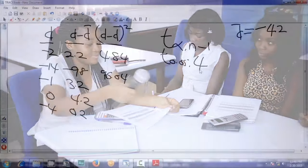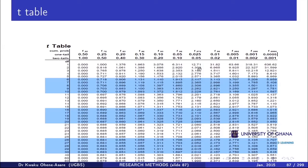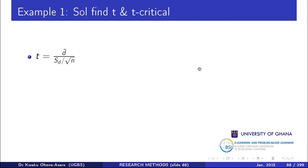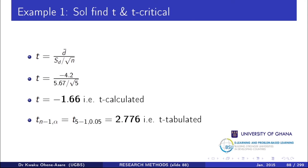The t-tabulated is 2.776. Comparing: the absolute value of t-calculated (1.66) is smaller than t-tabulated (2.776). Since the calculated is not greater than the tabulated, we do not reject the null hypothesis at the 5% level of significance.